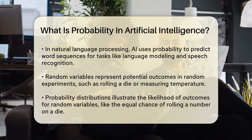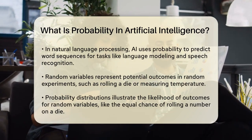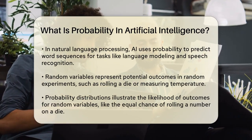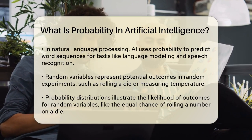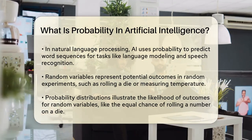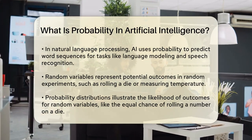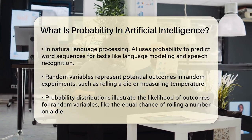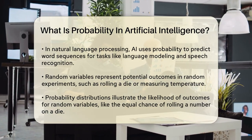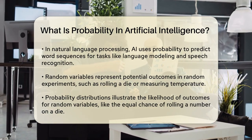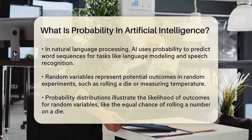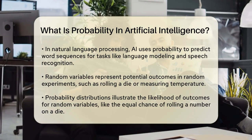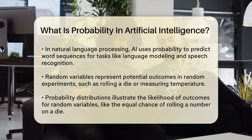Probability distributions are another important aspect. These distributions describe the likelihood of different outcomes for a random variable. For example, if you roll a six-sided die, the probability distribution would show that each number from one to six has an equal chance of being rolled.